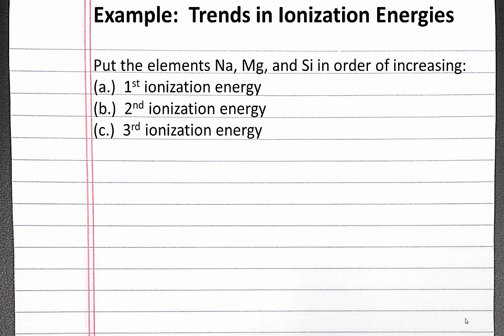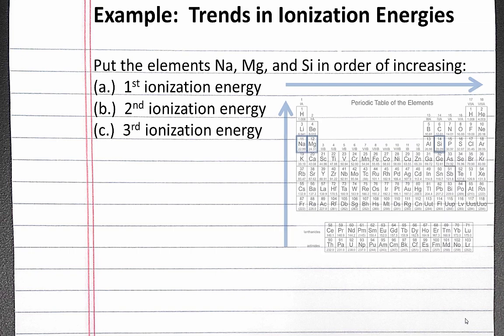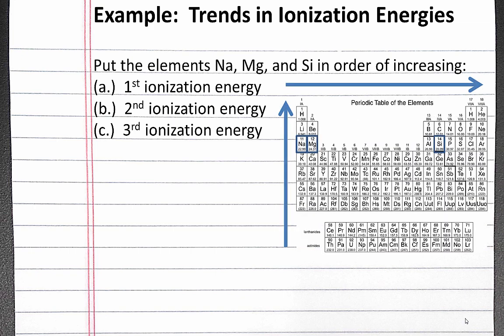Our general trend from the periodic table is that ionization energies increase going up and to the right. We also have to determine whether we are removing core electrons or valence electrons. To do this, we need to write the electron configurations.